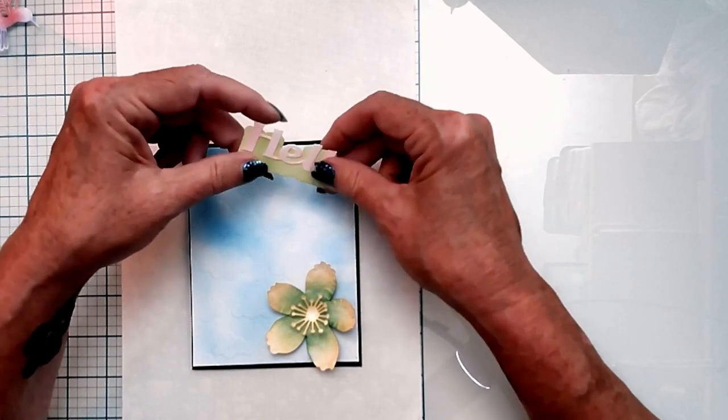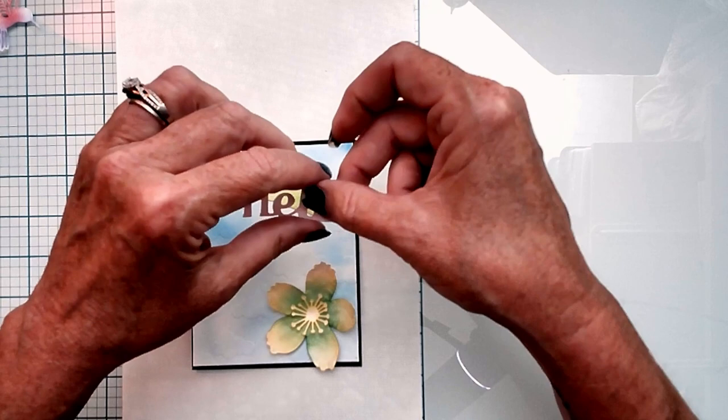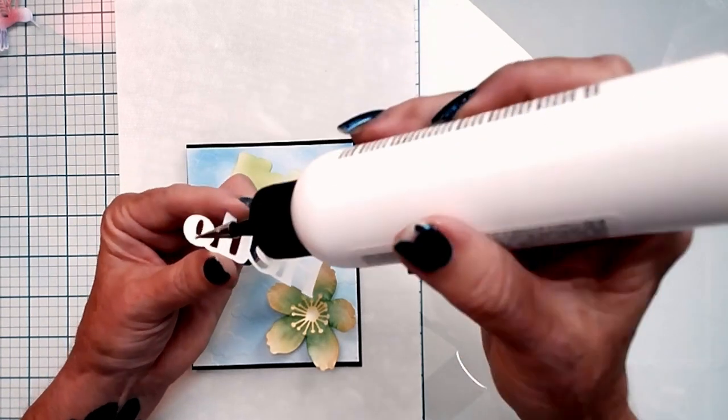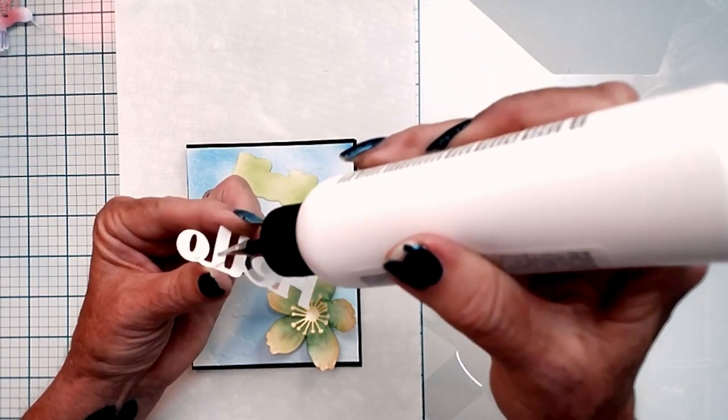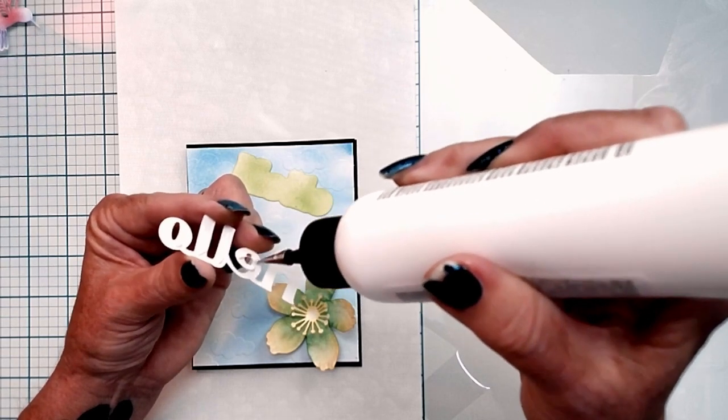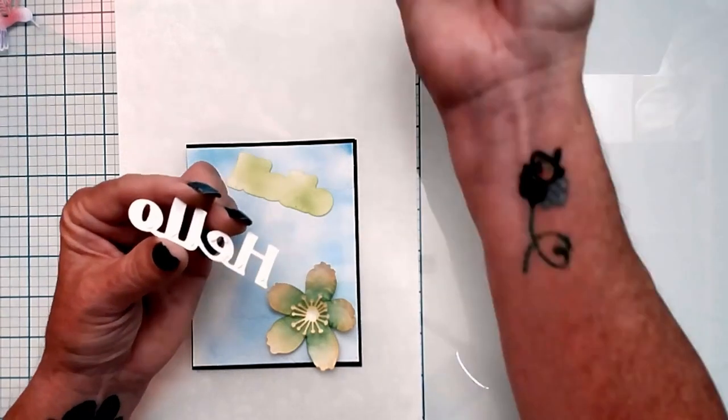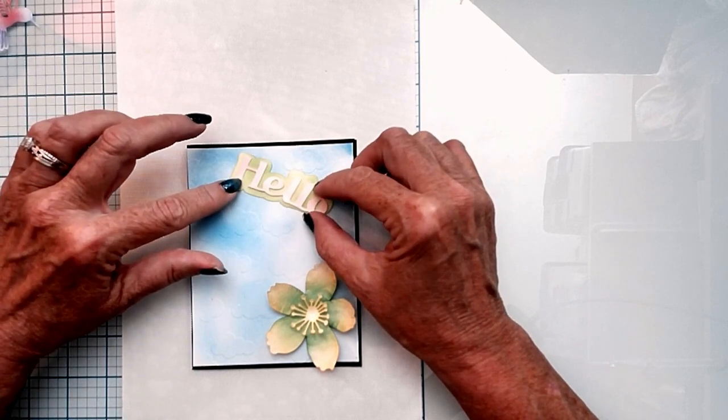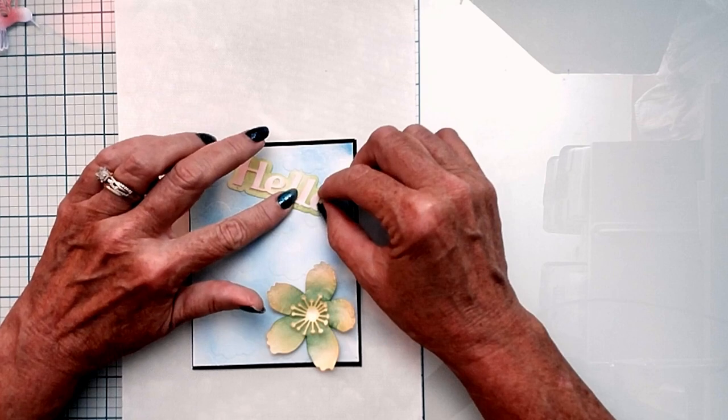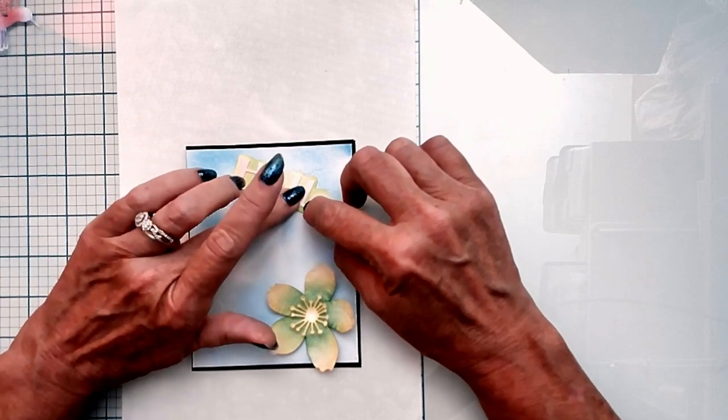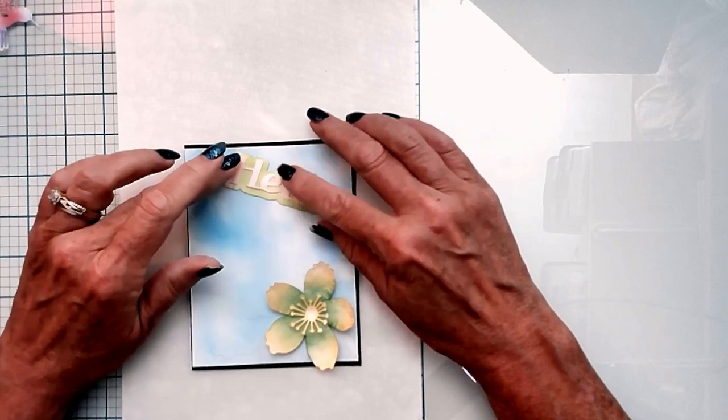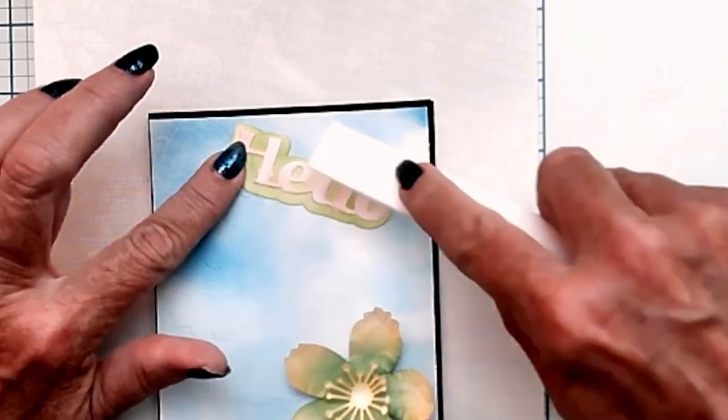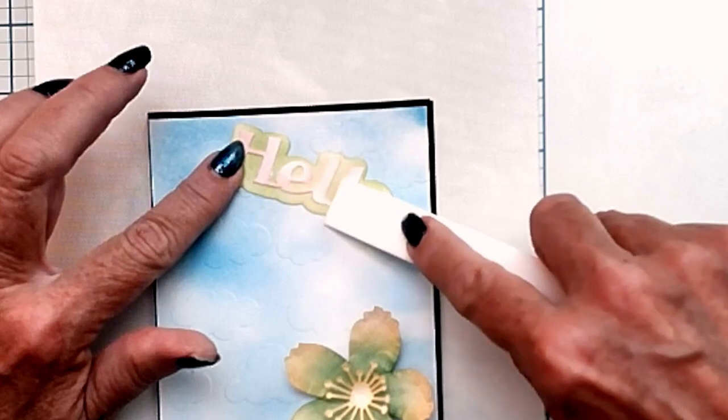Then I'm going to grab my hello and add the glue to the back of my hello. You can either do a small bead or you can do just dots. You do want to make sure that you get all around these letters so that they don't pop up. I'll place it like so in the center of my bubble. I like my bubble.